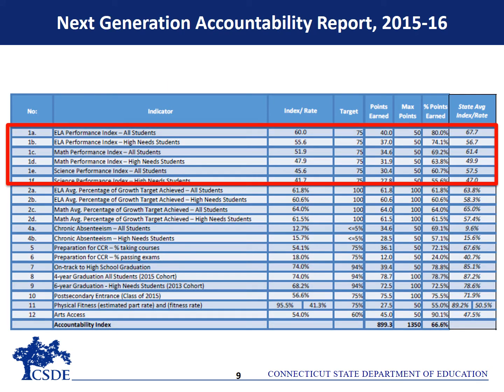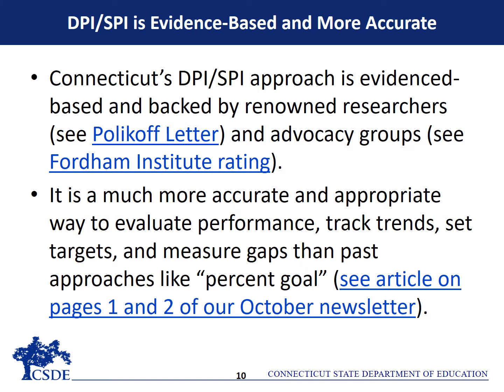The DPI and SPI are Indicator 1 of Connecticut's Next Generation Accountability System. Connecticut's DPI-SPI approach is evidence-based and a much more accurate method of reporting average achievement across grades and assessments.